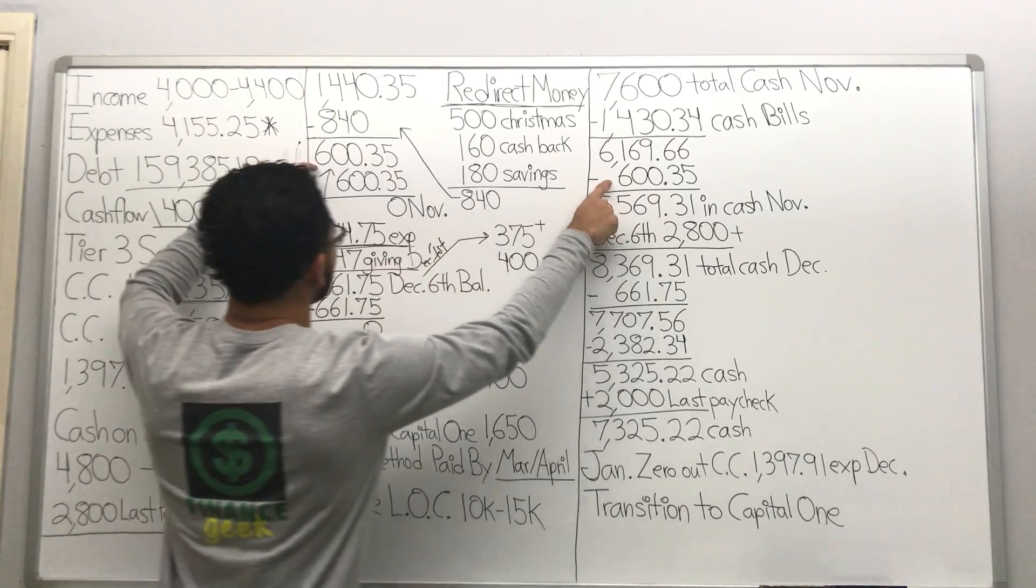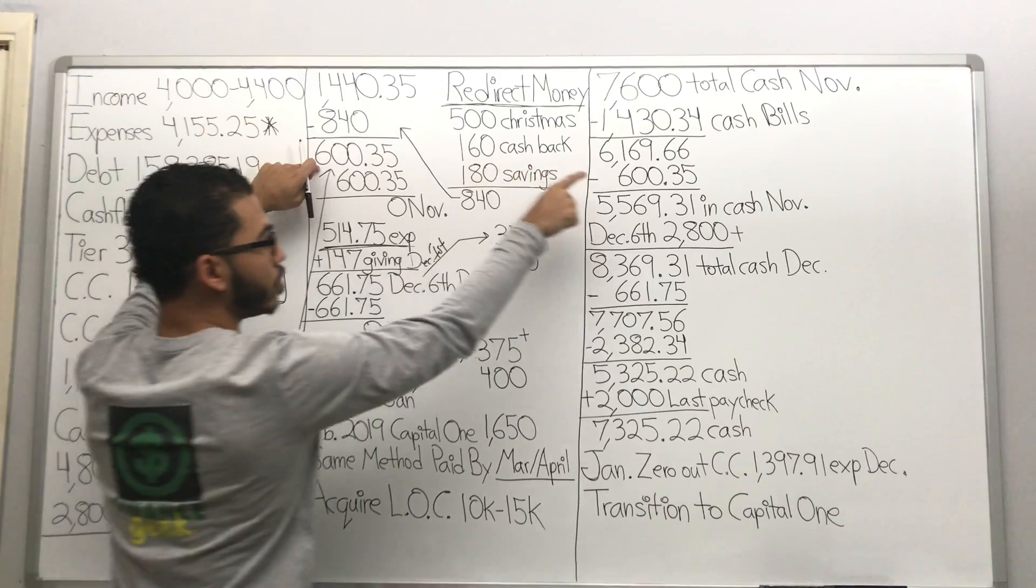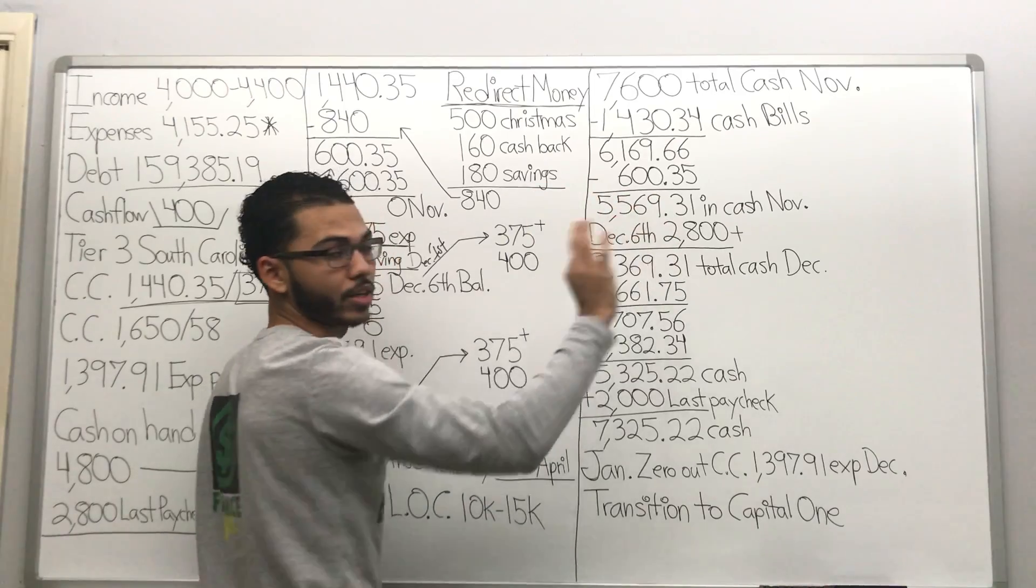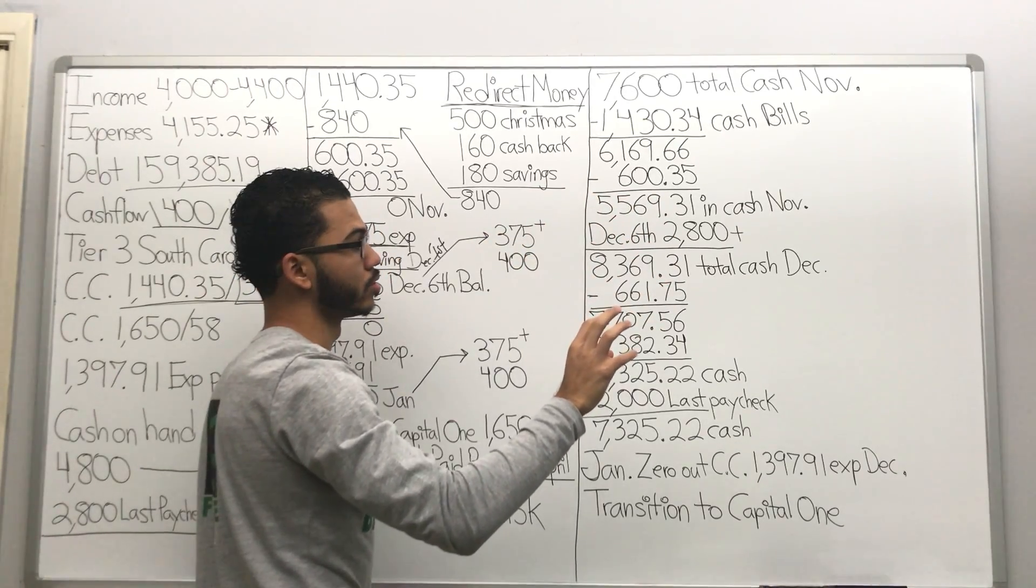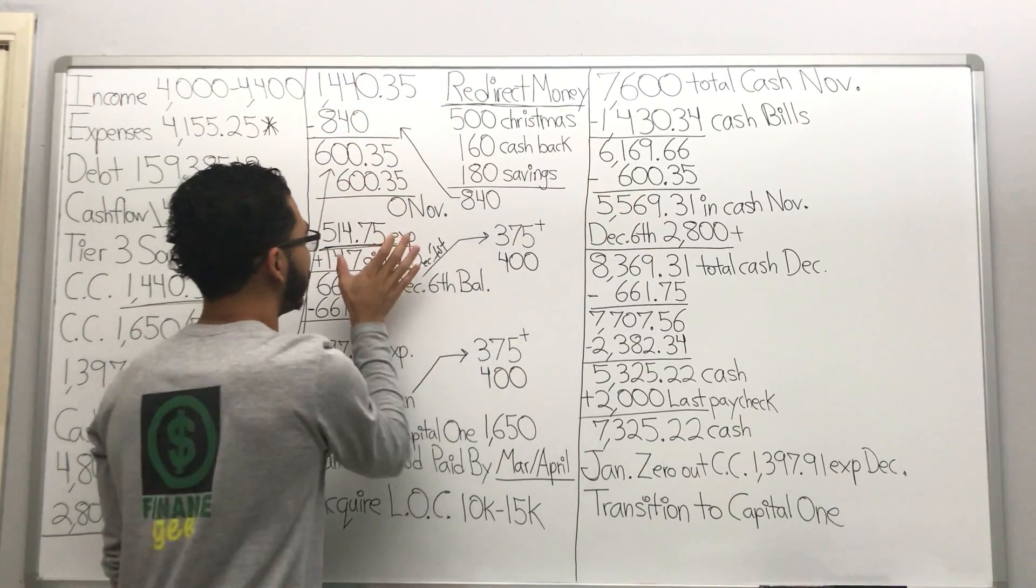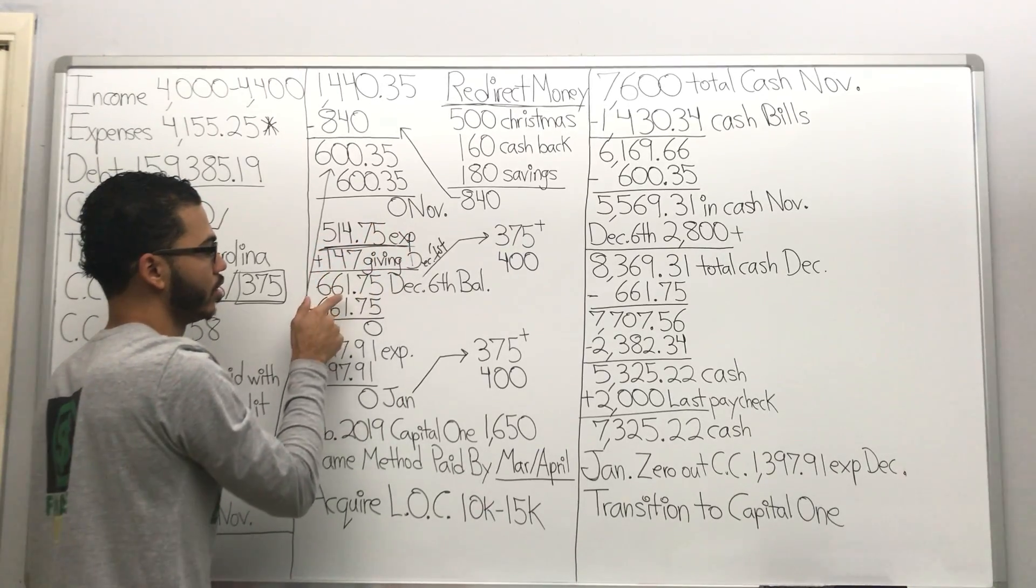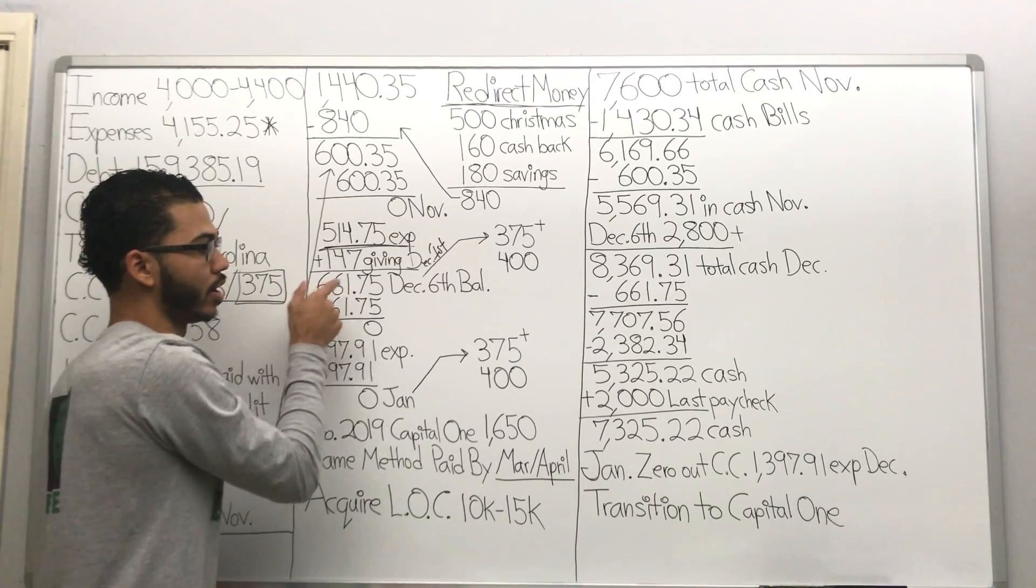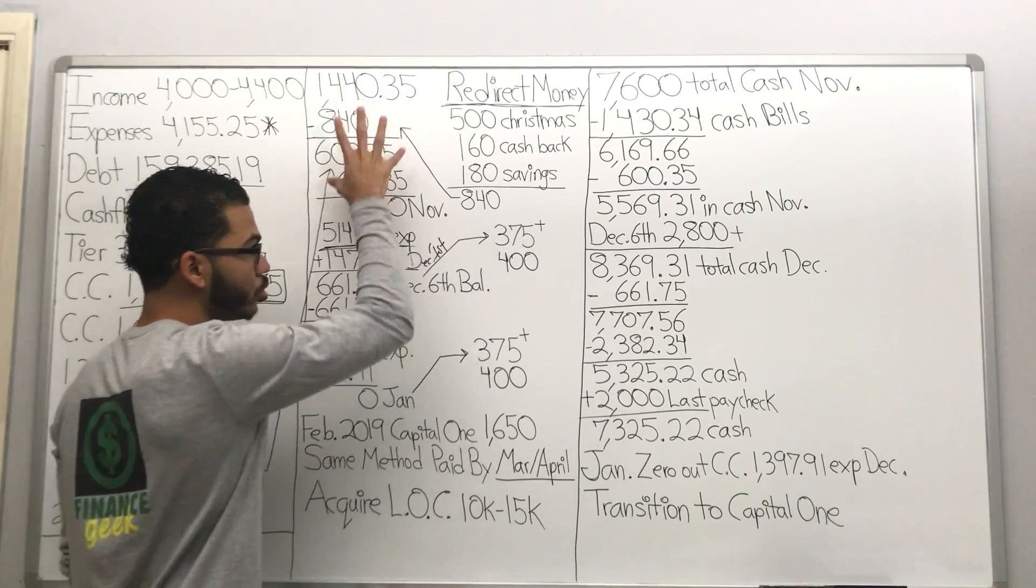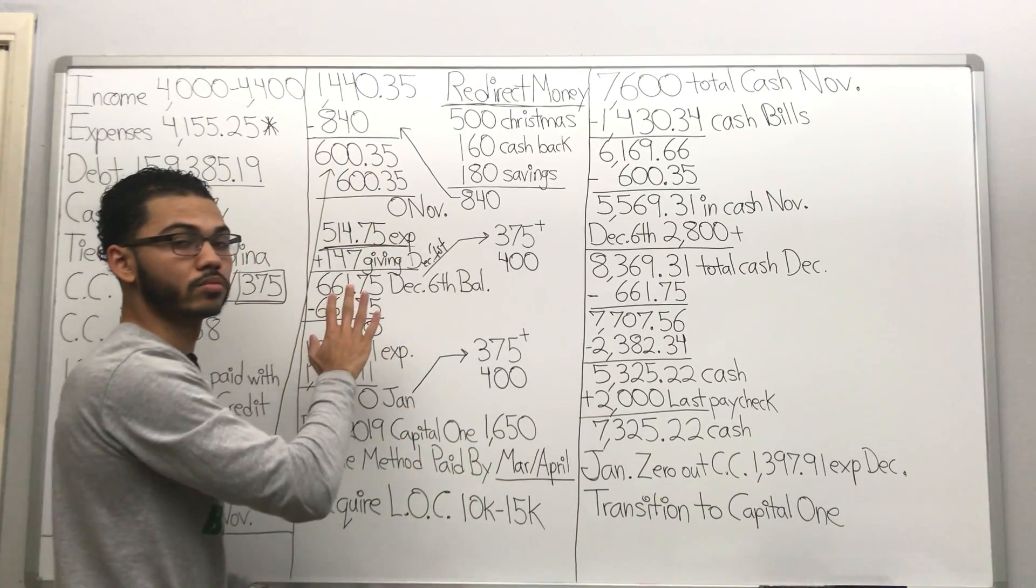Now what happened? The $635 went towards that credit card. So now we're at $5,569.31 cash on hand, still in November. Credit cards paid off. I got a new debt of $514.75 plus $147, new debt $661.75. No bill yet. No interest being accrued on a credit card. Takes 30 days before any interest gets tacked on if I don't pay this in full. Cool?